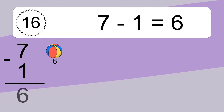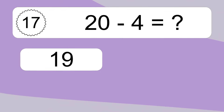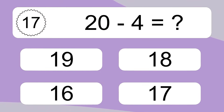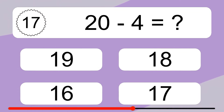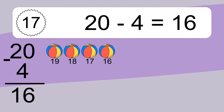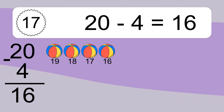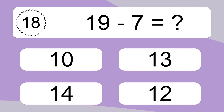7 minus 1 equals 6. Let's count it: 6. 20 minus 4 equals what? 20 minus 4 equals 16. Let's count it: 19, 18, 17, 16. 19 minus 7 equals what?